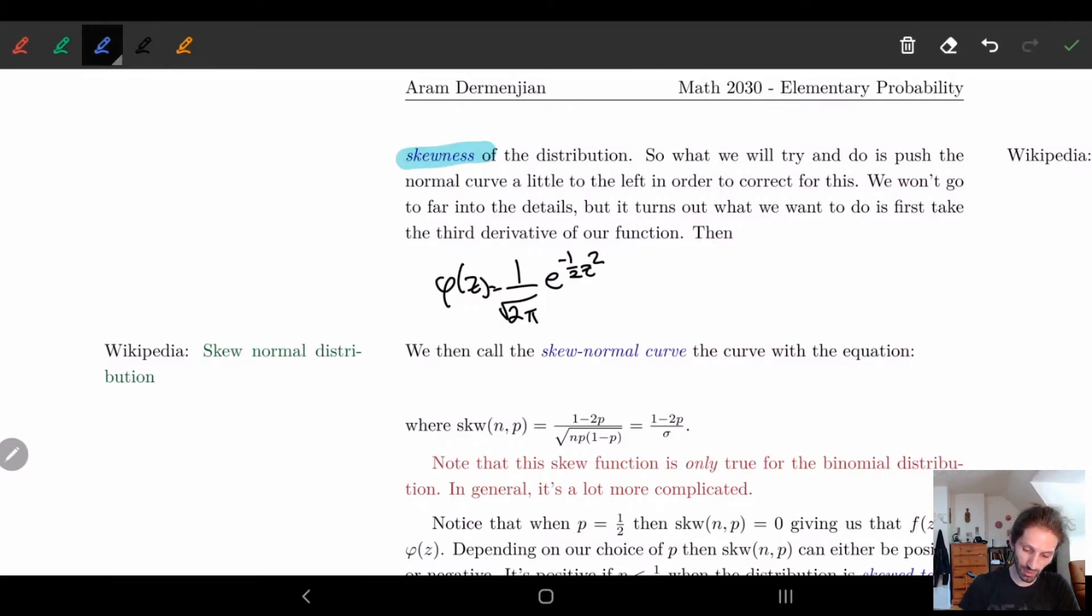And here a lot of times what we had, so this is the standard one. And remember, a lot of times we saw z is equal to (b minus the expected value). I guess most of the time we use μ here and σ.